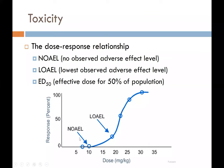That threshold is the NOAEL — No Observed Adverse Effect Level. Due to the practicality of experiments, we cannot have a fully continuous curve, so there will be gaps between doses. For example, with six doses, if at the third dose we already see some adverse effect and at the second dose we haven't, then the second dose is the NOAEL and the third is the LOAEL — the Lowest Observed Adverse Effect Level. If we can cross from 50% response on the dose-response curve, the corresponding dose will be the ED50.